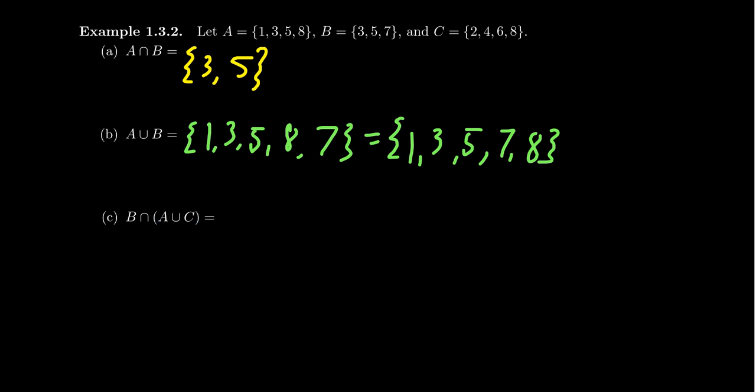So we have to compute B intersect with the union of A and C. So the union of A and C means everything that's in A or in C. So 1 is in A, so it's in the union. 2 is in C, so it's in the union. 3 is in A, so it's in the union. 4 is in C, so it's in the union. 5 is in A, so it's in the union. 6 is in C, so it's in the union. 8 is in both A and C, so it'll be in the union. So the union of A and C is exactly this: {1, 2, 3, 4, 5, 6, 8}. 7 feels really left out right now, but oh well.